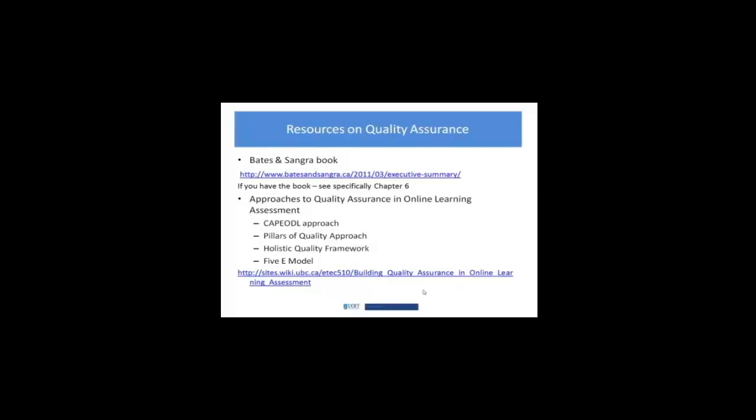The second link is a wiki site at UBC on building Quality Assurance in Online Learning, and it does a nice job of providing an overview of a variety of ways to approach it. The first one has a big acronym and it's a comprehensive approach to program evaluation of online distributed learning. There's also a Pillars of Quality approach from the Sloan Consortium where you can find some really good resources. There's a holistic quality framework and the 5E model. Between these two resources and the Commonwealth of Learning paper, you can really start to get a handle on the various issues emerging with Quality Assurance in Online Learning.